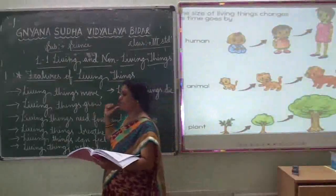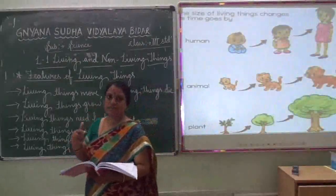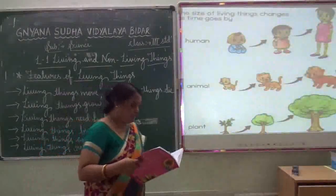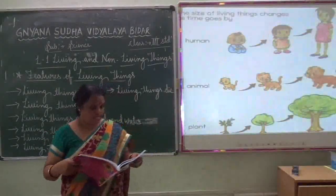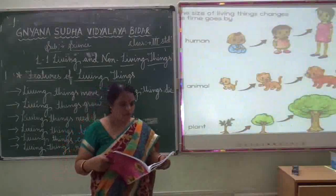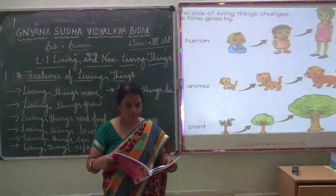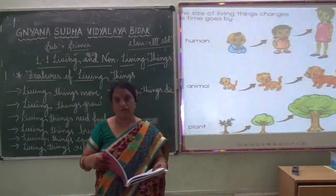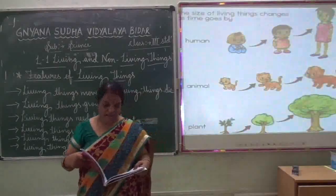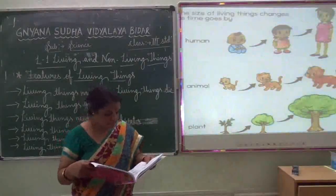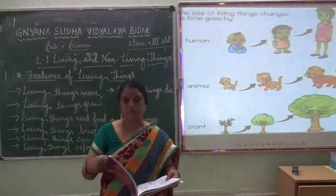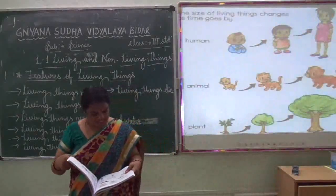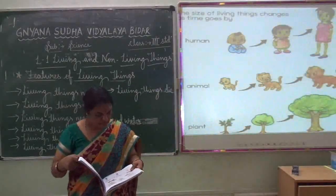Living things grow. All living things show growth. A seed grows into a small plant, and the small plant grows into a big plant. A puppy grows into a dog. A chick grows into a cock or a hen. A baby grows into a child, and the child grows into a man or a woman. So we see that all living things grow.